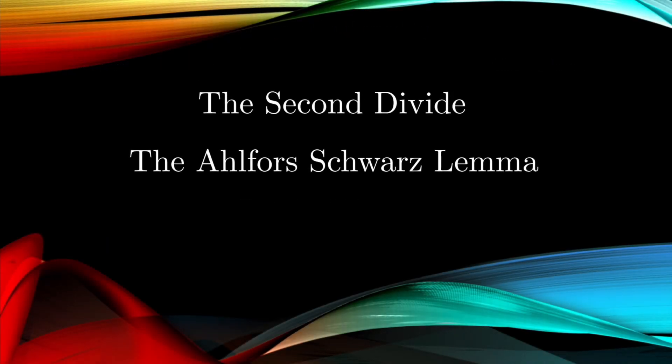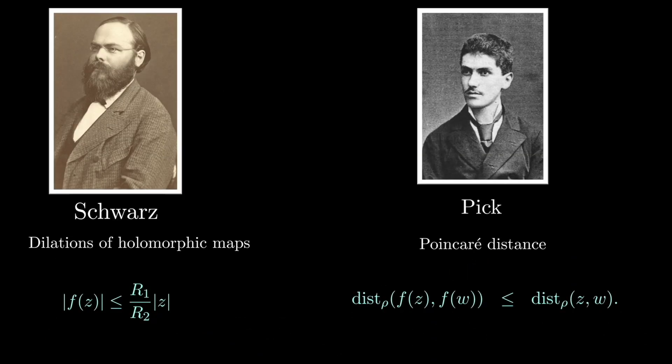Okay, so now I want to talk about the second divide, which is due to Ahlfors. Schwarz told us that the Schwarz Lemma was essentially a statement about holomorphic maps. There was a unit disk with respect—the radius of the image of the unit disk is bounded by the ratio of the constituent radii in the domain, and it should be R2 over R1, I think.